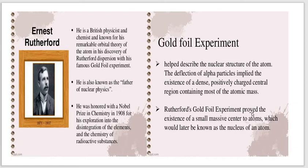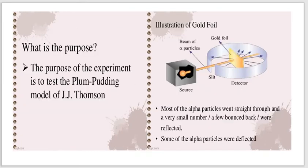Rutherford's Gold Foil Experiment proved the existence of a small, massive center to atoms, which would later be known as the nucleus of an atom. The purpose of the experiment was to test the plum pudding model of J.J. Thomson. This experiment was carried out by H. Geiger and E. Marsden under the suggestion of Ernest Rutherford.